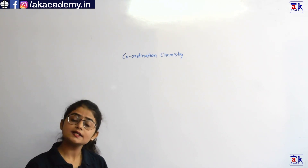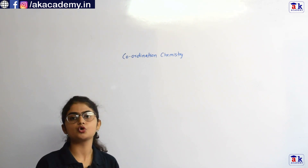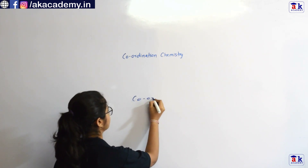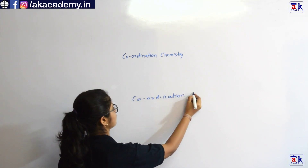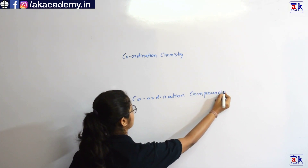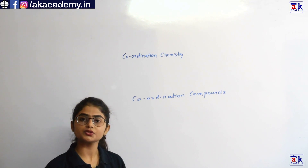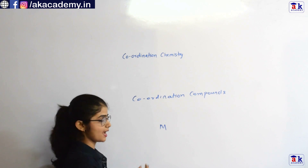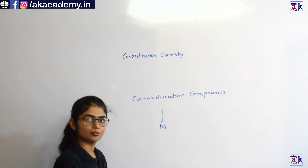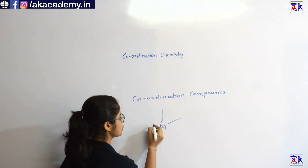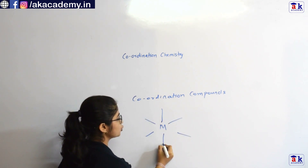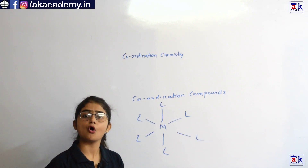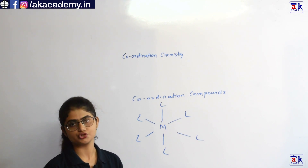So let us first start with the topic of coordination chemistry. What is coordination chemistry? It is the branch of inorganic chemistry that deals with coordination compounds. Coordination compounds are compounds which have a chemical structure in which a central metal atom or ion is attached to non-metallic atoms or groups of atoms called ligands, by means of coordinate covalent bonds.